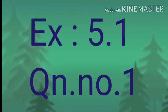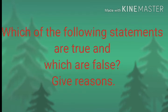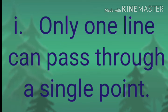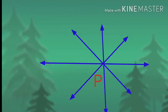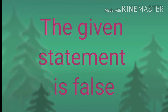Now we can discuss Exercise 5.1, first question: which of the following statements are true and which are false? Give reasons for your answers. First sub-question: only one line can pass through a single point. It is false, because an infinite number of lines can pass through a single point as shown in the following figure — infinitely many lines can be drawn through point P.